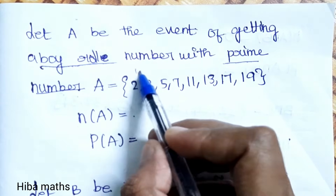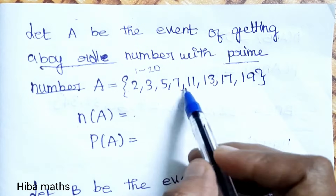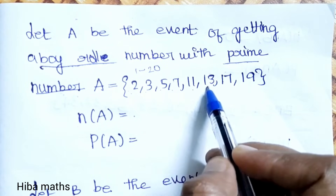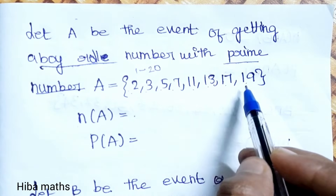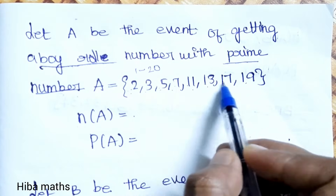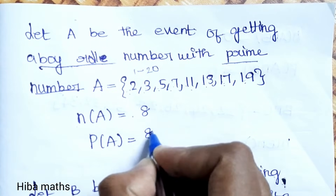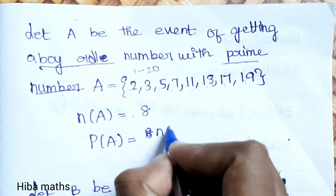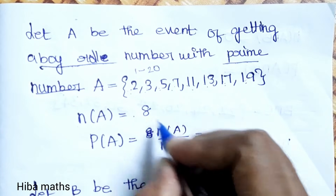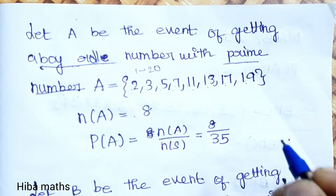If boys are 1 to 20, the prime numbers among them are: 2, 3, 5, 7, 11, 13, 17, 19. So there are 8 prime numbers up to 20. Let A be the event of getting a boy with a prime roll number. So n(A) = 8, and P(A) = n(A) / n(S) = 8/35.